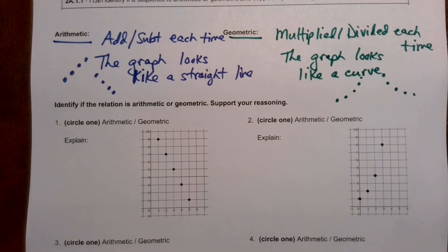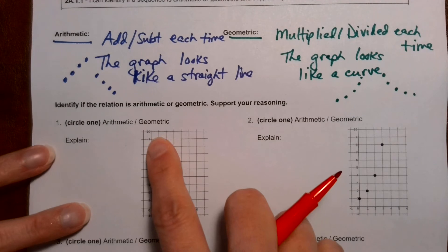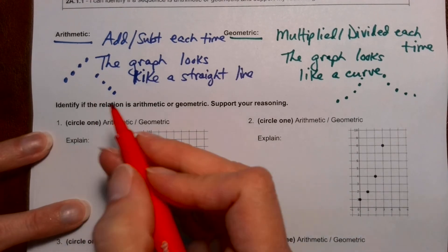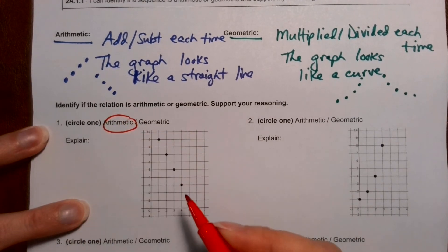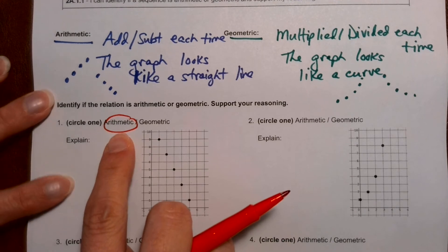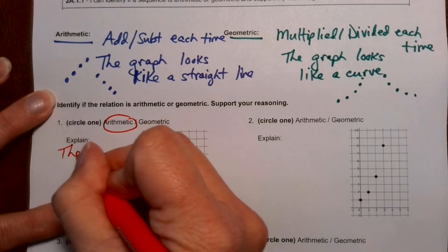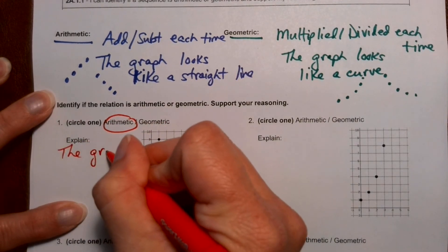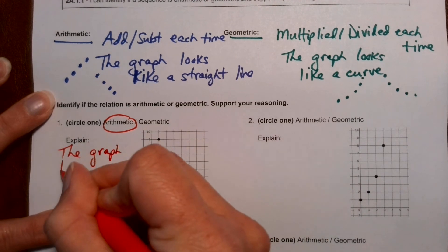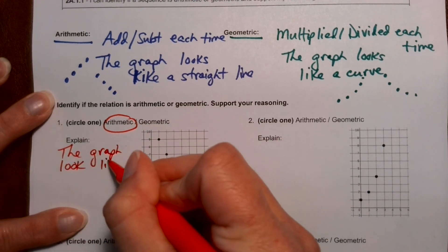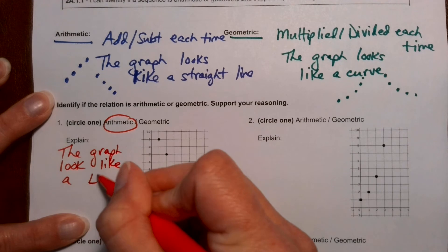Okay, but they are lined up in a nice straight line. So I'm going to call this one arithmetic. And the reason that I'm saying that is because the graph looks like a line.